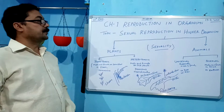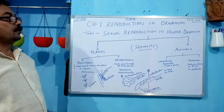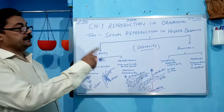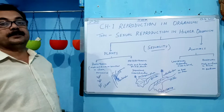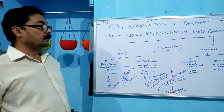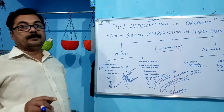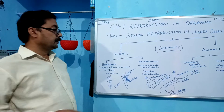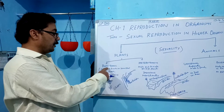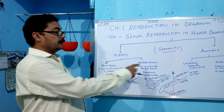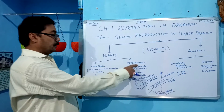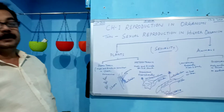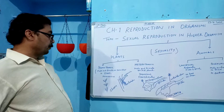Today we discuss sexual reproduction in higher organisms, that is in plants and in animals. First, we discuss sexuality. There are two types here: male and female, and what they are called in plants. In the case of plants, they are known as homothelic and heterothelic — that is the sexuality in the plant.